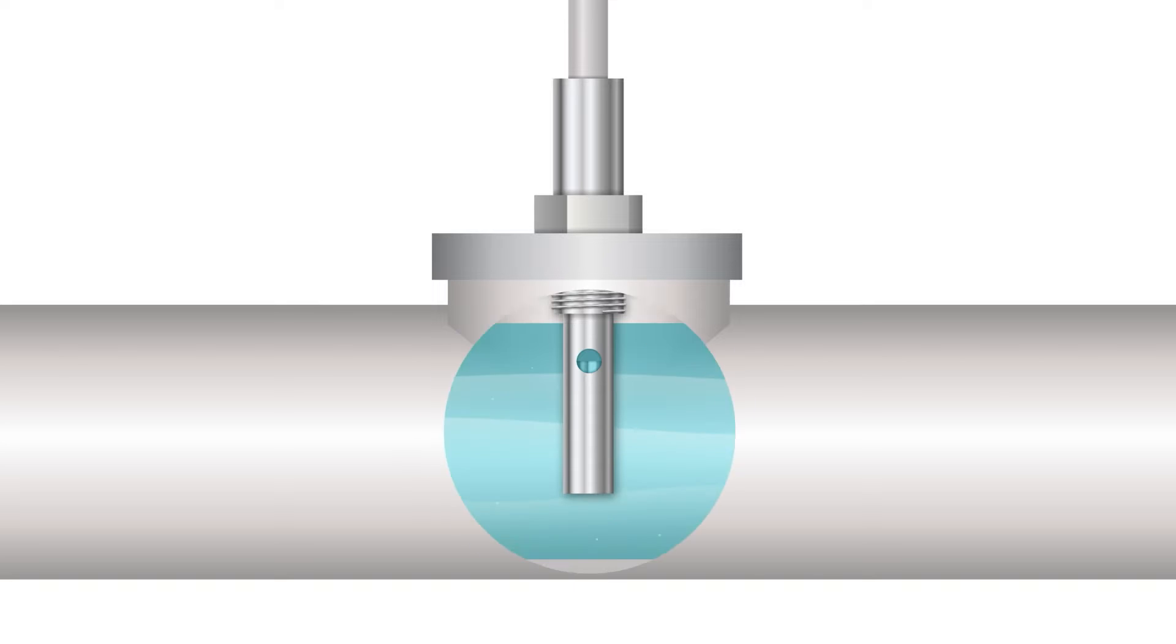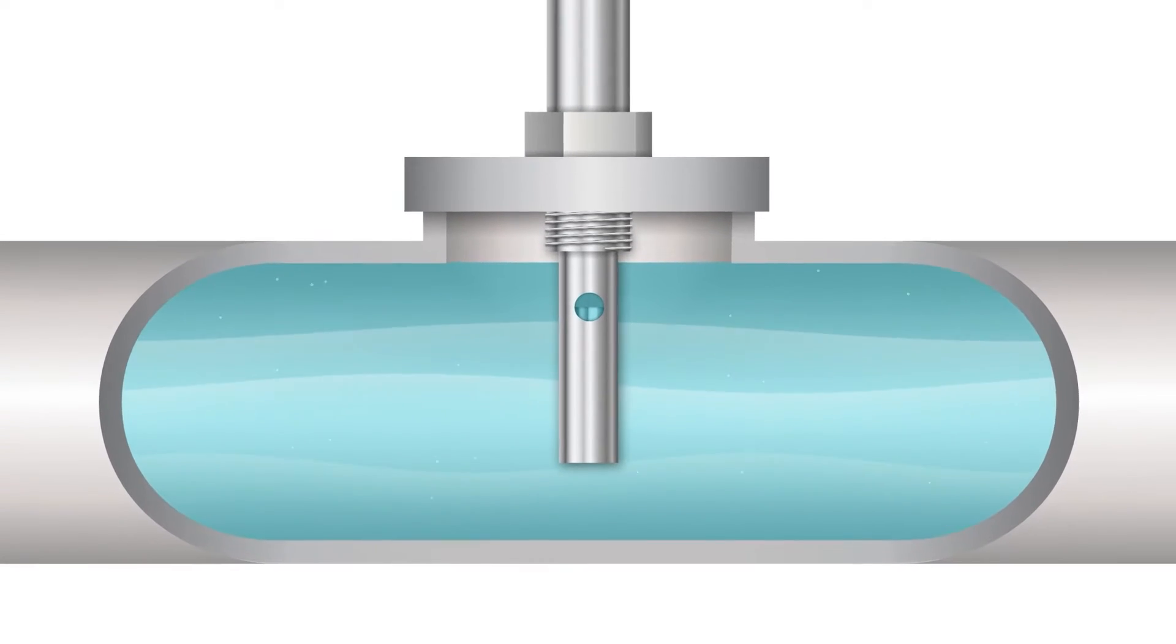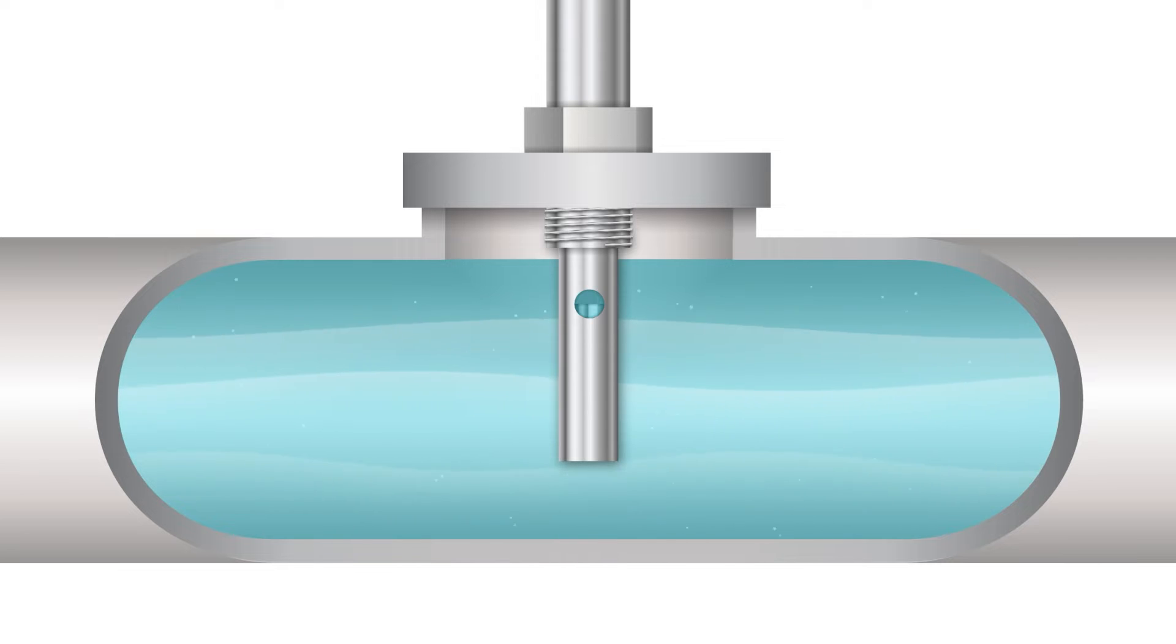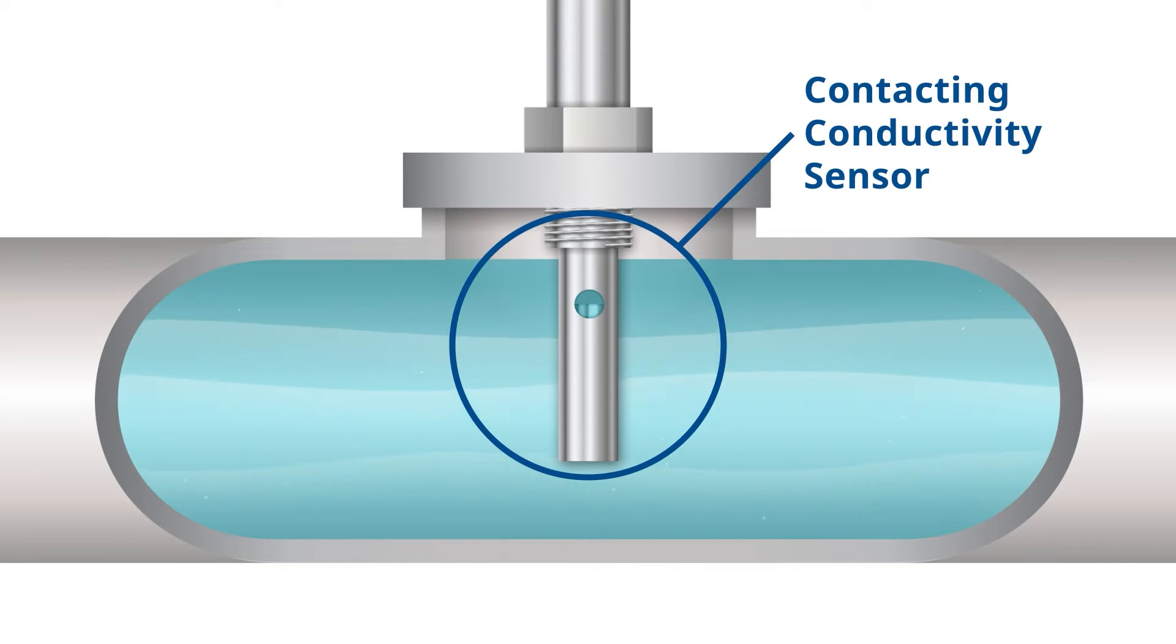Conductivity is a measure of a fluid's ability to conduct electricity. Since electricity is conducted via dissolved ions in the fluid, conductivity sensors are used to measure the total number of dissolved ions present.